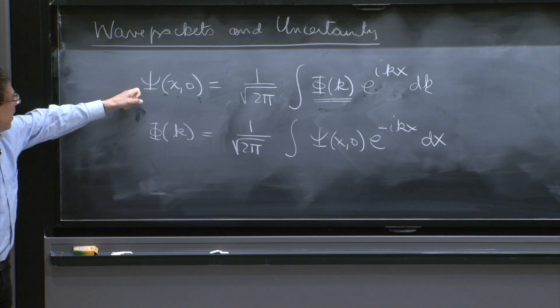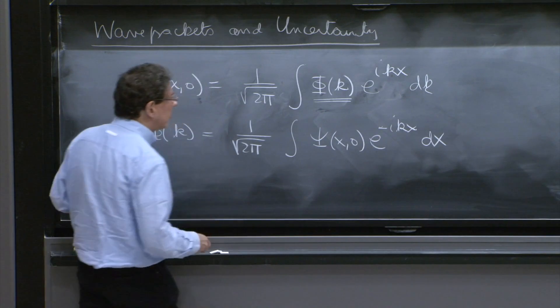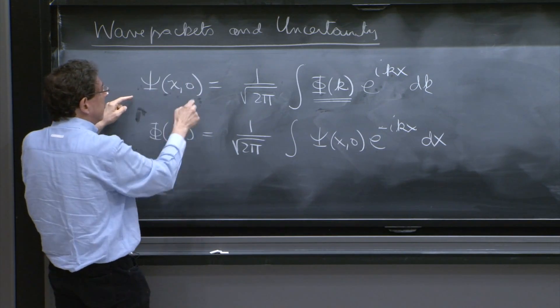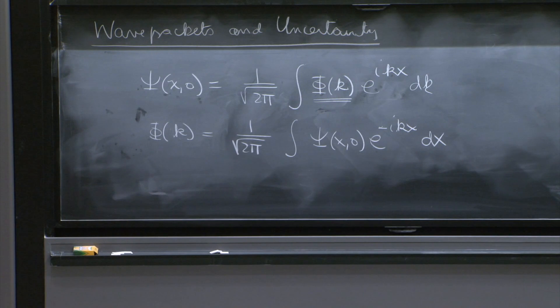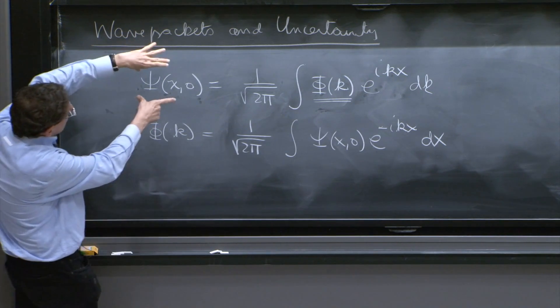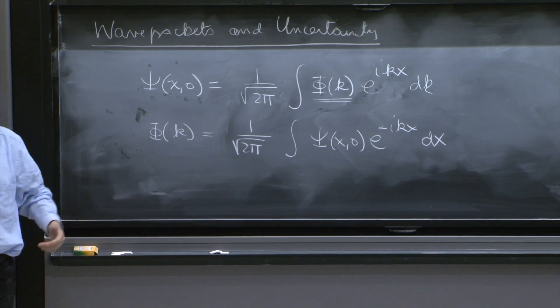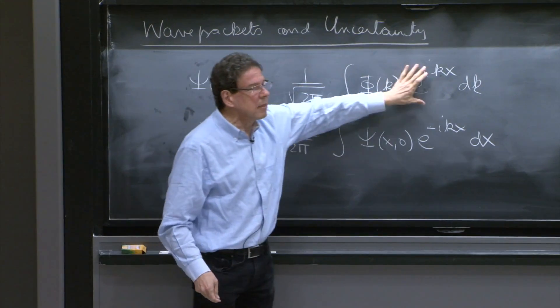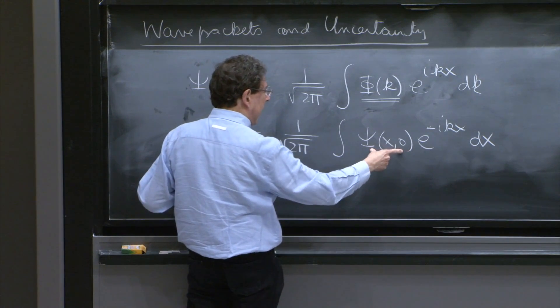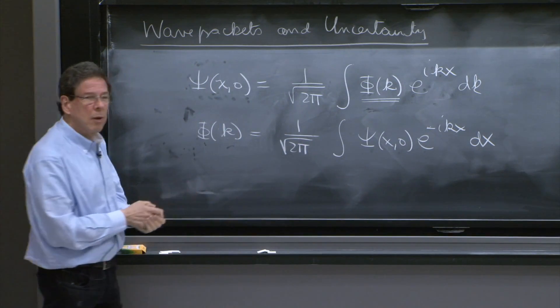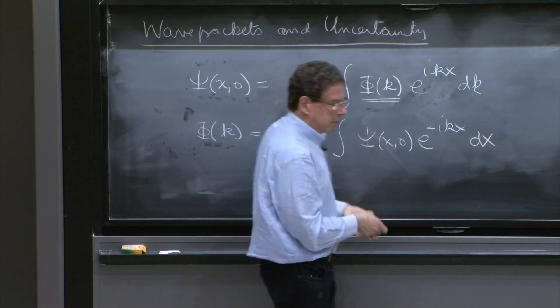So if you know ψ of x0, you know φ of k. You can calculate this integral, and you can rewrite ψ of x0 as a superposition of plane waves. So that's how you would do a Fourier representation. So somebody gives you an initial wave function, and maybe it's a sine function or a Gaussian or something. Then what you would do if you wanted to rewrite it in this way is calculate φ of k because you know this ψ. You can calculate this integral, at least with a computer. And once you know φ of k, you have a way of writing ψ as a superposition of plane waves.